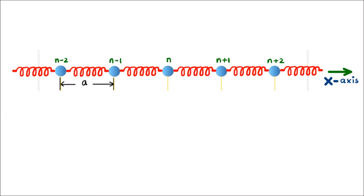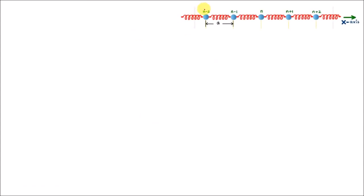Let us now set up our system of a one-dimensional monoatomic solid, which can be represented as an infinite linear chain of atoms oriented along the x-direction. Each atom has a mass m and is separated from its nearest neighbor by a distance a, which is the interatomic distance. Considering the 0th atom to be at the origin, the x-coordinate of the nth atom would be na, of the (n-1)th atom would be (n-1)a, and of the (n+1)th atom would be (n+1)a.